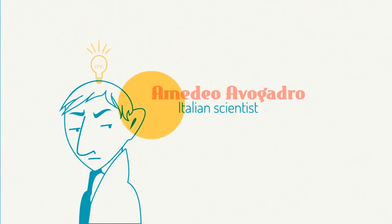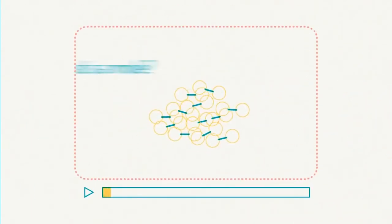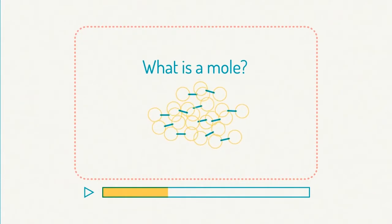Amedeo Avogadro was an Italian scientist. He gave his name to the number of particles in a mole. Maybe you don't yet know what a mole is. If so, just have a look at our video on moles before moving on with this lesson.